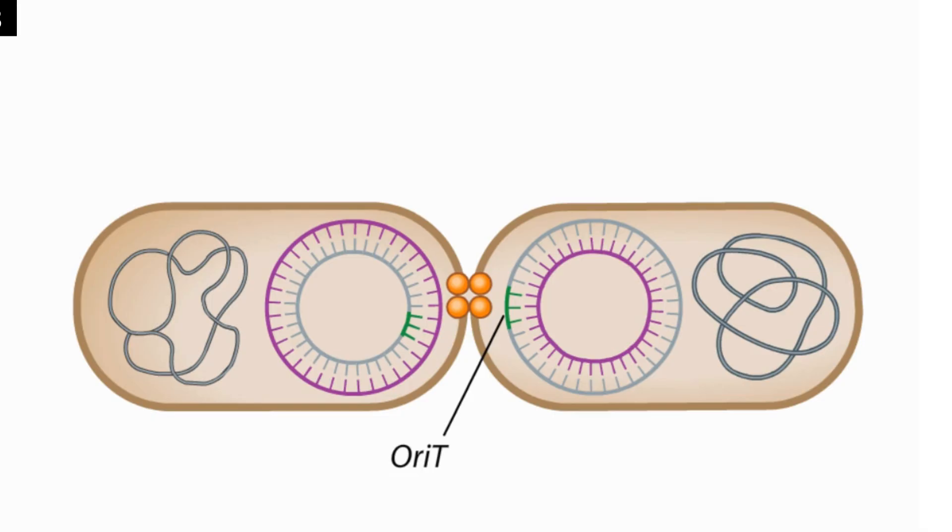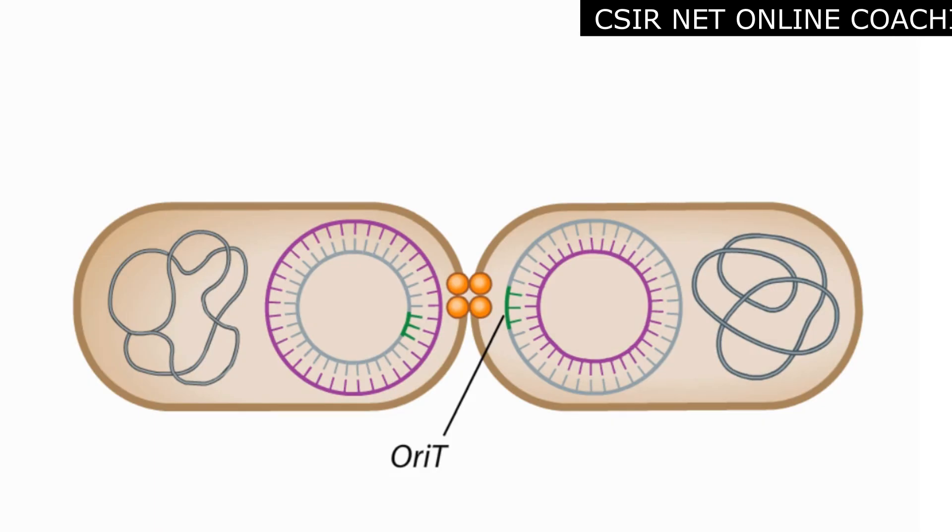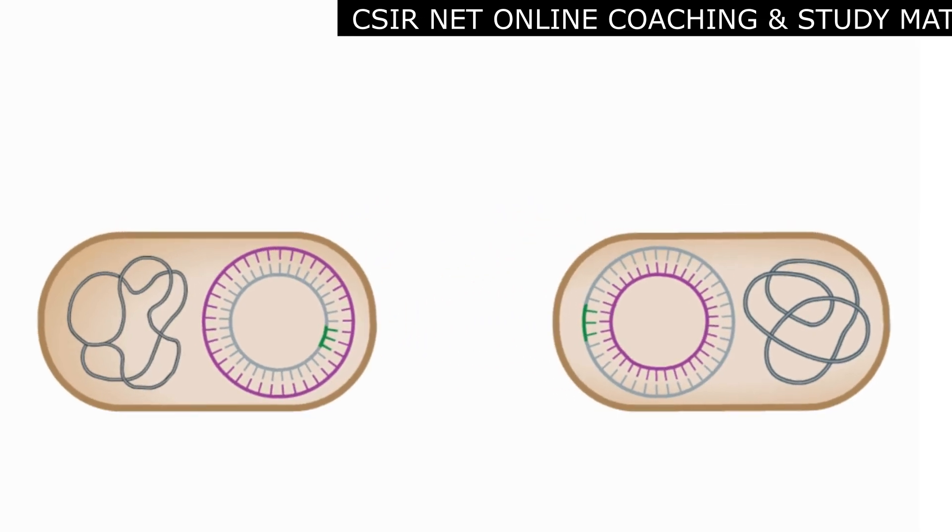This transfer process is very quick, taking less than 5 minutes to transfer the entire 110 KB F factor. Ultimately, the conjugation complex spontaneously comes apart and the membranes seal.